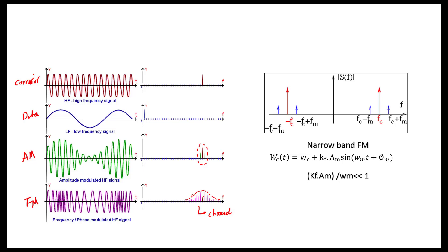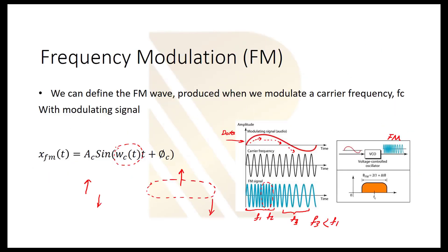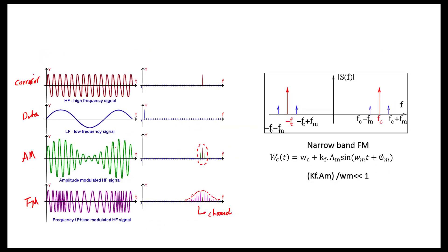A key benefit of FM modulation is that it is less susceptible to noise. Why? In AM modulation, the data is in the amplitude, and noise affects the amplitude, causing distortion — so it is not a really safe method. But in FM modulation, because we put our data inside the frequency, even if there is noise in the environment it will affect the amplitude of the signal, and we don't care about the amplitude because in FM the amplitude is constant — we only care about the frequency change.